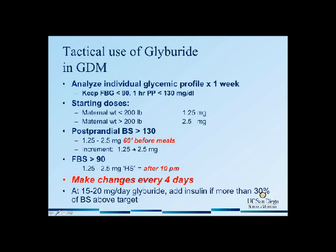I use it in a targeted manner to target their postprandial values. I instruct the patient to take the glyburide about an hour before her meals. We start anywhere from 1.25 to 2.5 milligrams, and then I increase it by 1.25 to 2.5 milligram increments to a max of 10 milligrams per meal.